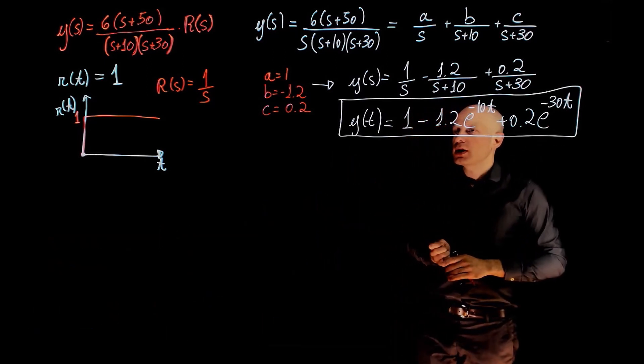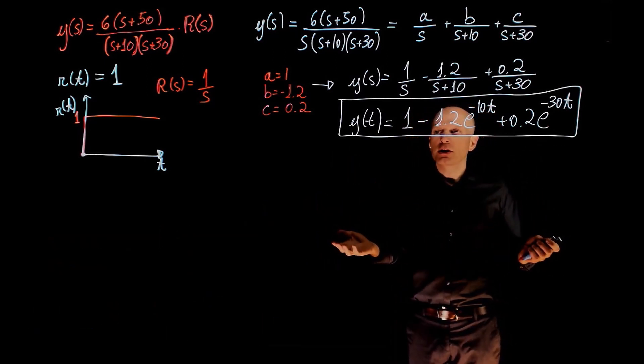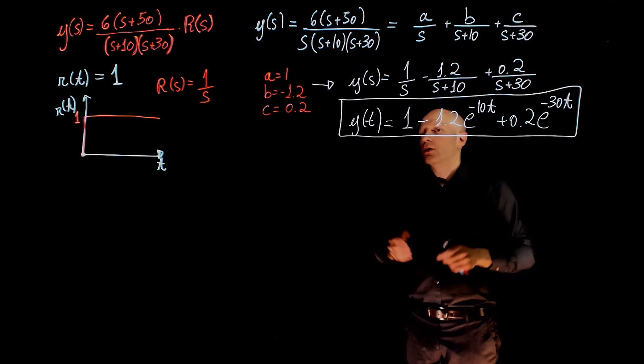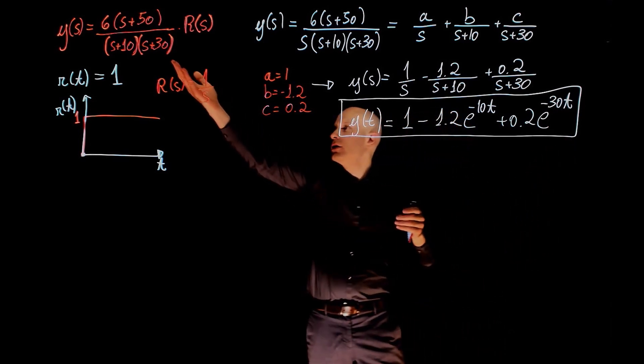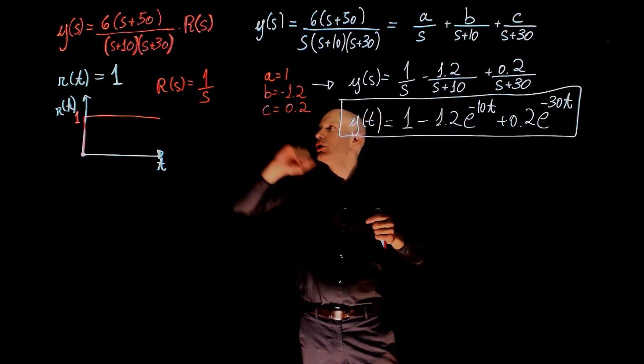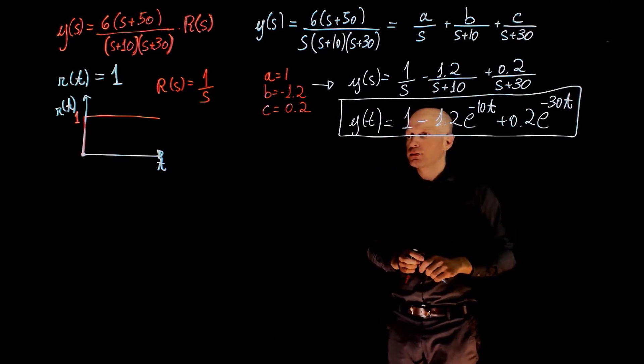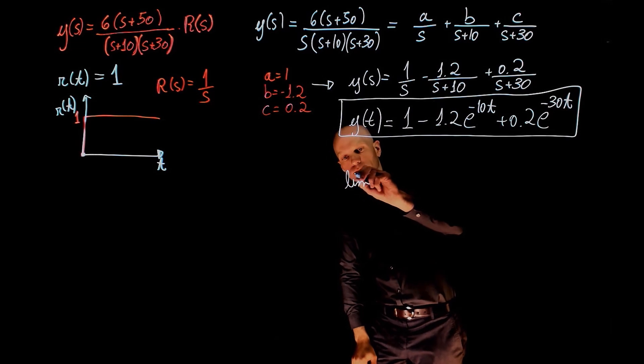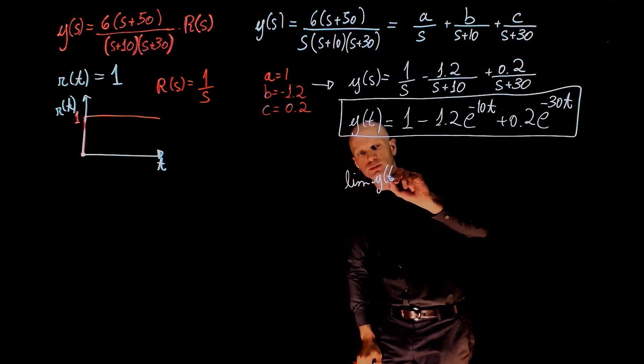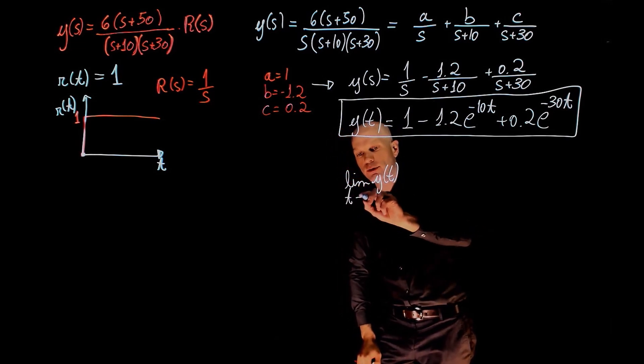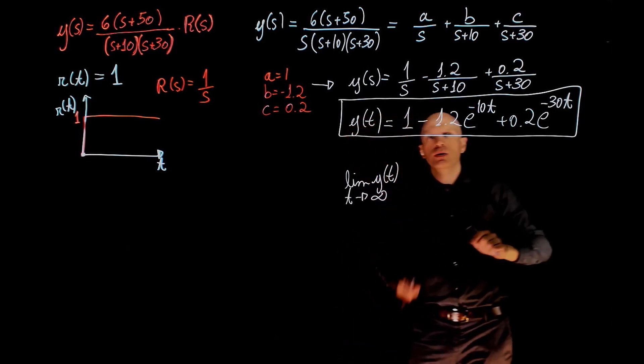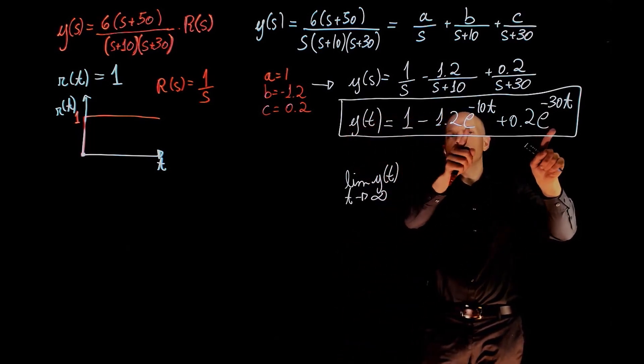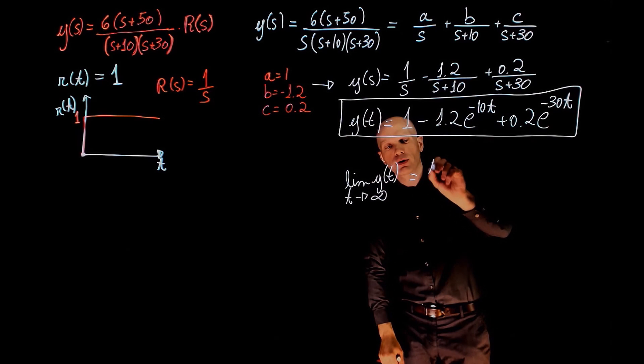Now that we have the time response, we can calculate the final value using the time response or even, again, using the final value theorem from the function y of s. If you take the limit of y of t when t tends to infinity, these two terms go to 0. We are left with 1.